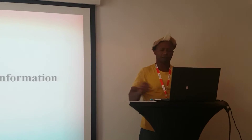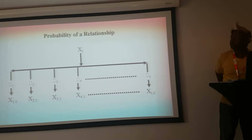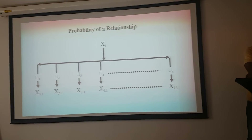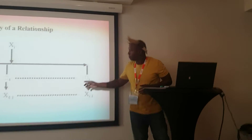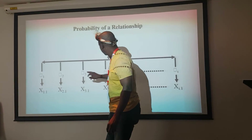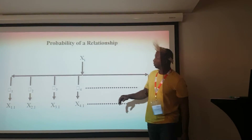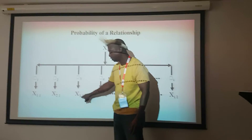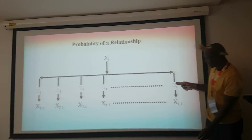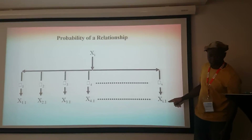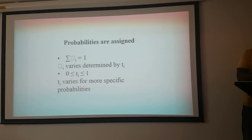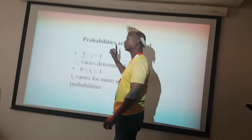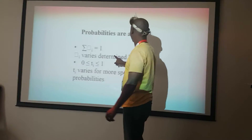Roots of the algorithm of information. Seeing as everything is in a relationship, there is a probability of Xi getting into a relationship. There is a probability P3 of Xi getting into a relationship with X3 and we get X3,1. There is a probability P1 of Xi getting into a relationship and we get Xi,1. Probabilities are assigned, and the summation of Pi equals 1. Pi varies — it is determined by Ti, and it's not always a constant probability.